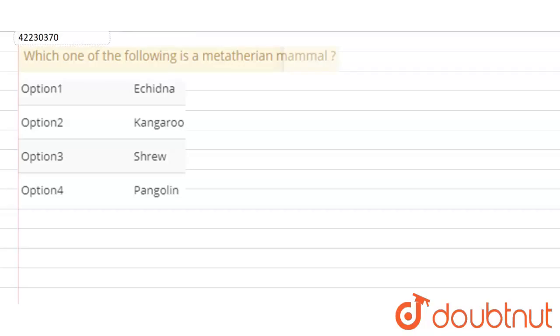Here we will tell you which mammal is metatherian. If we look at the classification of mammals, we have divided them into three groups.